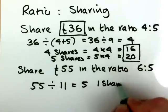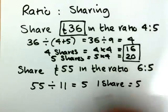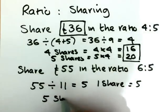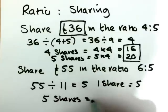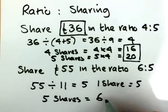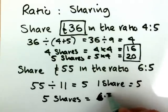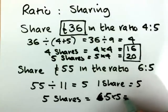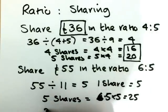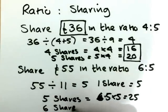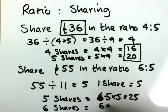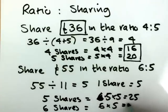5 shares will equal 5 times 5, and 6 shares will equal 6 times 5, which is 30.